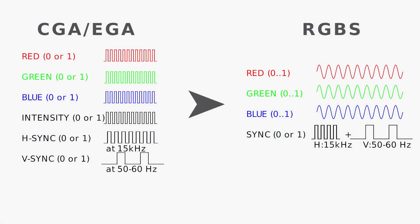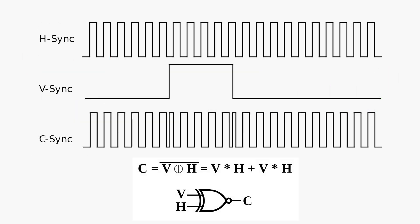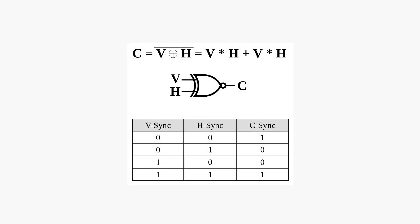Now what about the second problem — the composite sync signal? As the Rastory already explained, composite sync is just a combination of both horizontal and vertical sync signals sent through an exclusive NOR logic. Very simple.